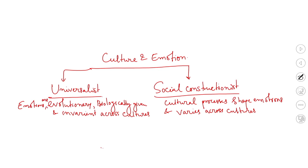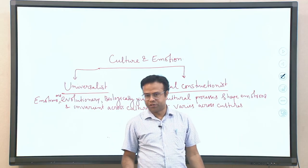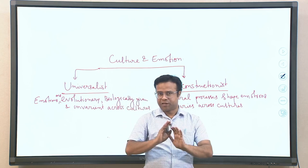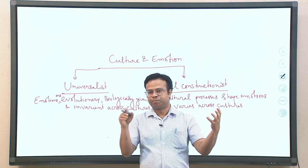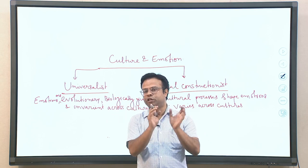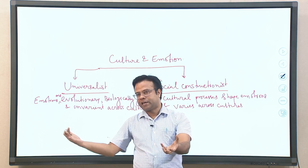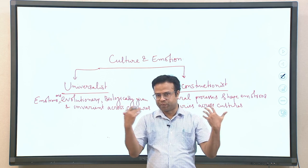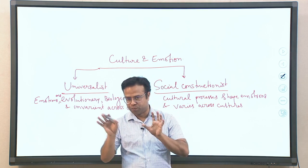These are the two major perspectives found in research — some researchers are more oriented toward the universalist perspective, others toward the social constructionist perspective. Both perspectives have very different assumptions, and accordingly their researches are shaped. In today's lecture we will focus on the universalist perspective, and in the next lecture we will focus on the social constructionist perspective.